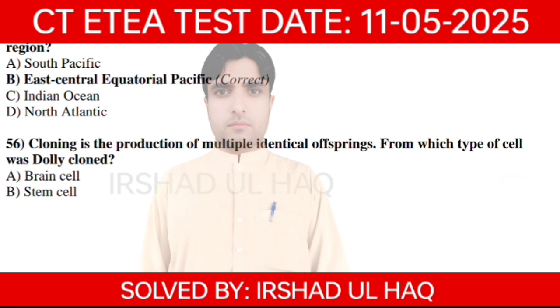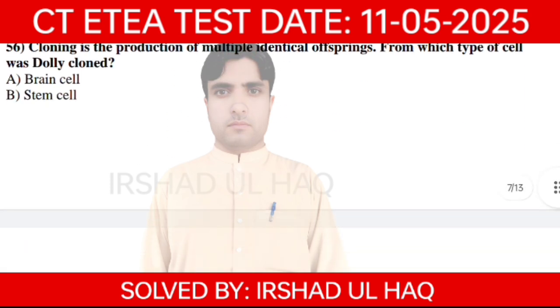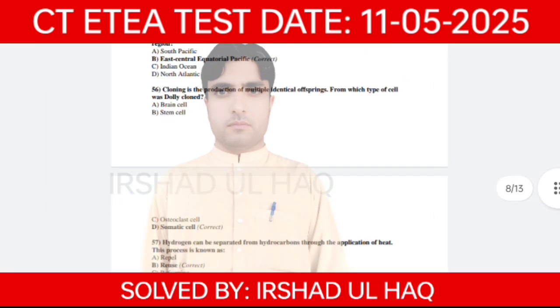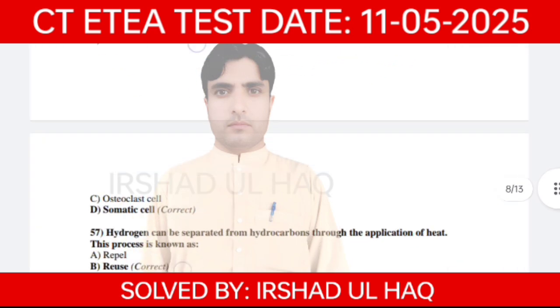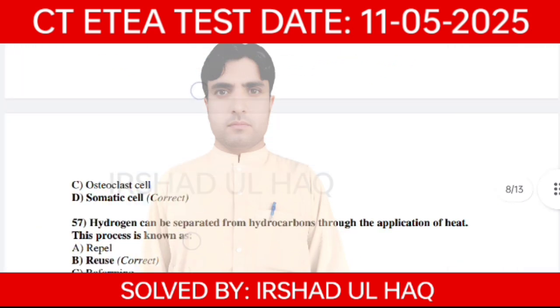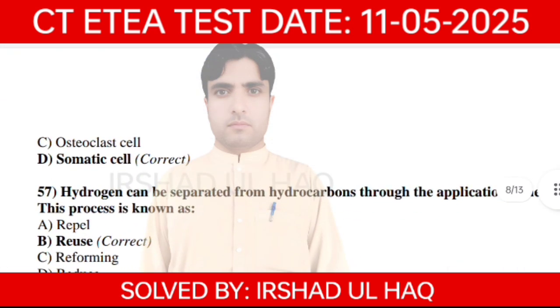Cloning is the production of multiple identical offspring. From which type of cell was Dolly cloned? Option number D: Somatic cell.